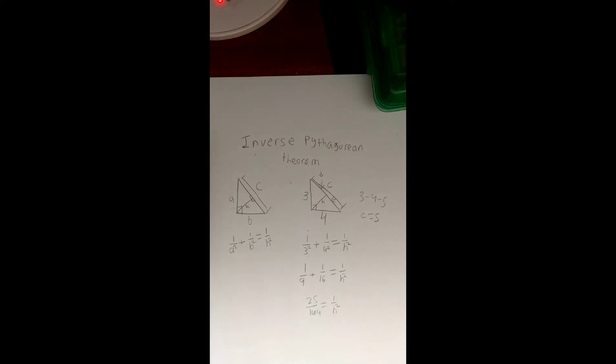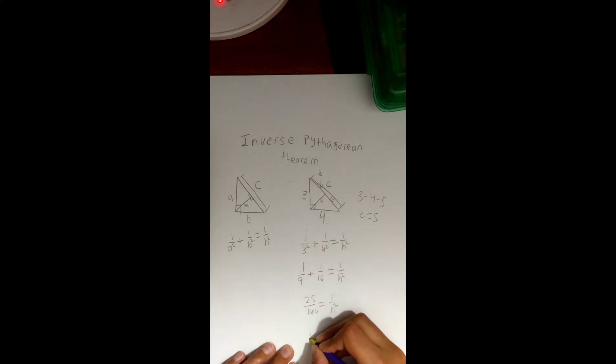But now, if you want to solve for h squared, and you have 1 over h squared, to solve for that, you take the reciprocal of both sides. So I'm just going to flip it. You'd get h squared equals 144 over 25.